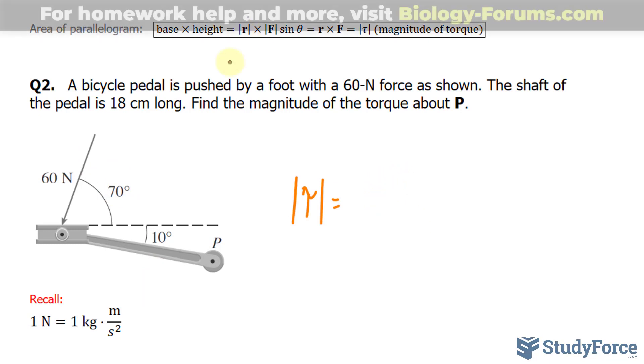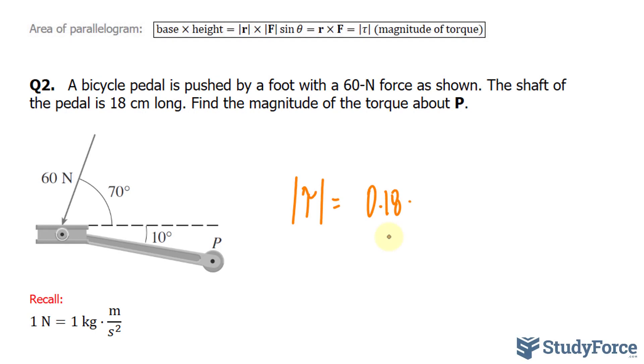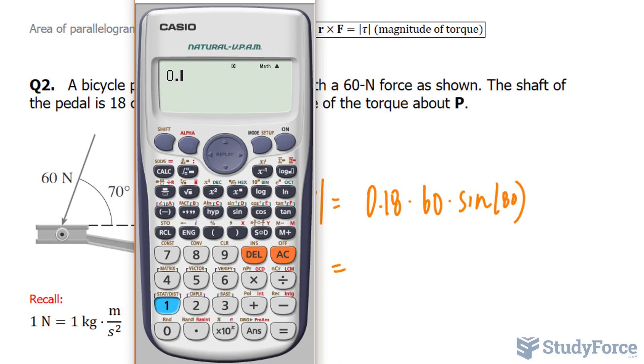So I'll write down R, which is the distance, 18 centimeters converted into meters, is 0.18 times the magnitude of this vector, which is 60, times sine at 80 degrees. Let's use our calculator again. 0.18 times 60 times sine at 80, and we end up with 10.6 joules.